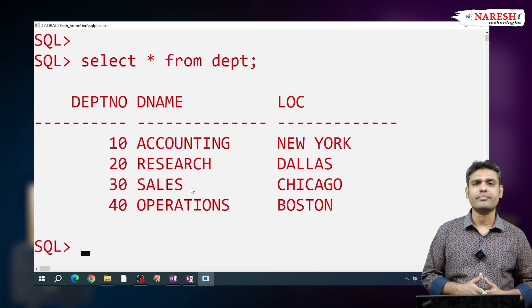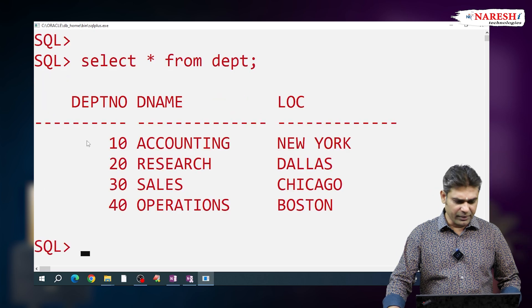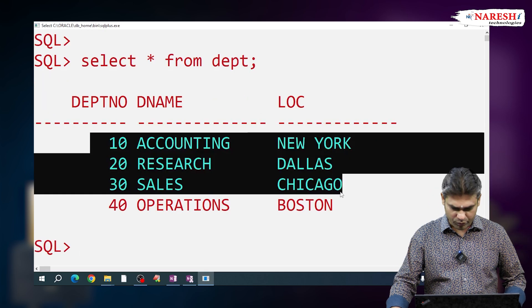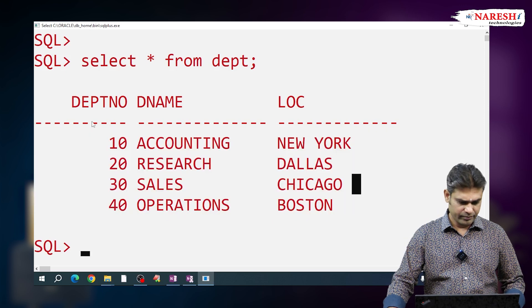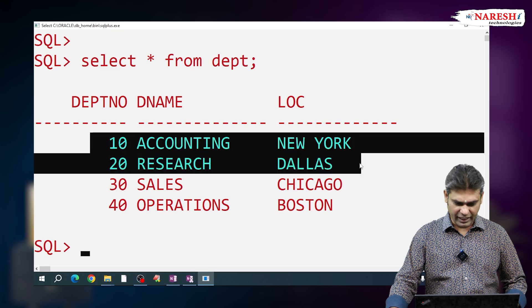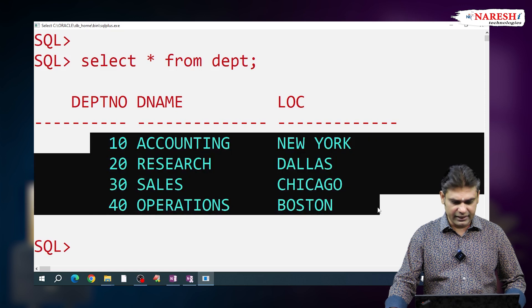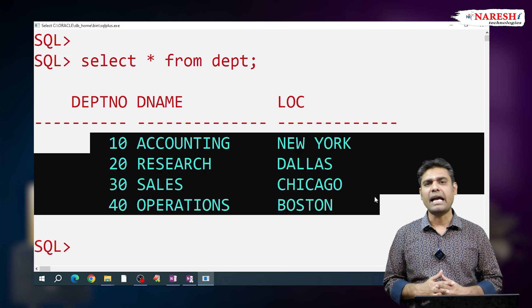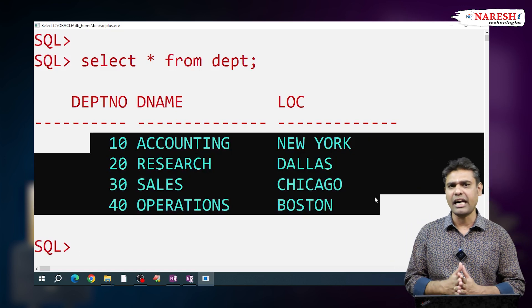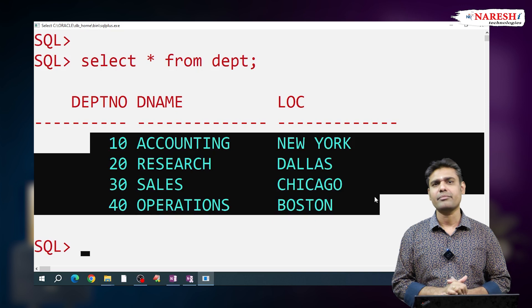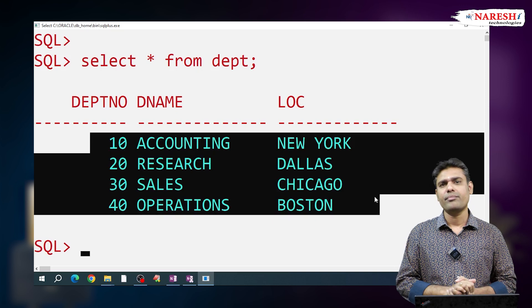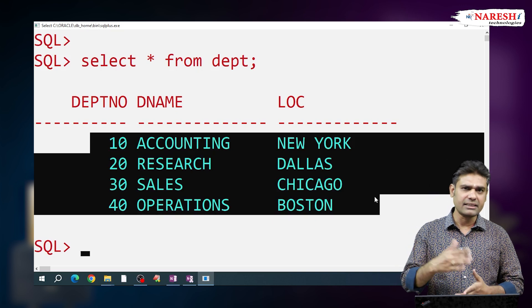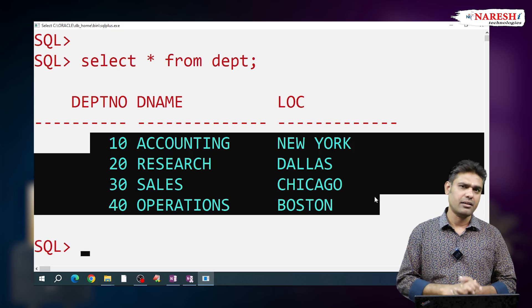Let me show one example. Here one table is there — the department table. Let me open it: SELECT * FROM department. Observe, this department table has four rows. Now assume that accidentally I am deleting all these rows. I am deleting all records and I am committing it. Can we roll back? No.